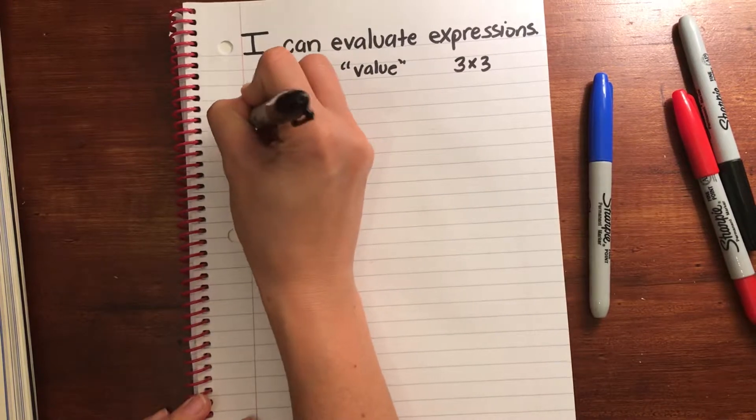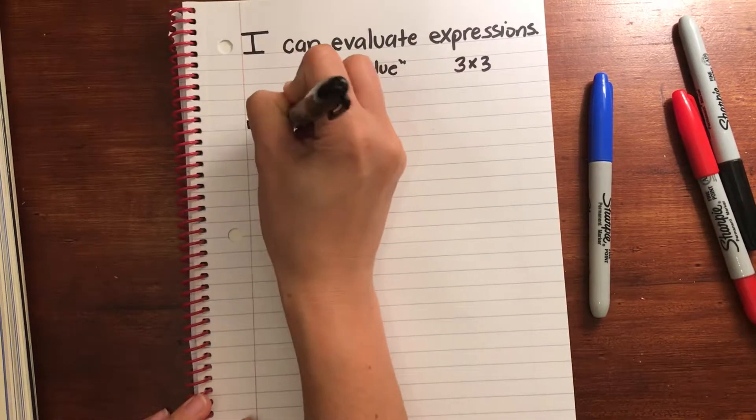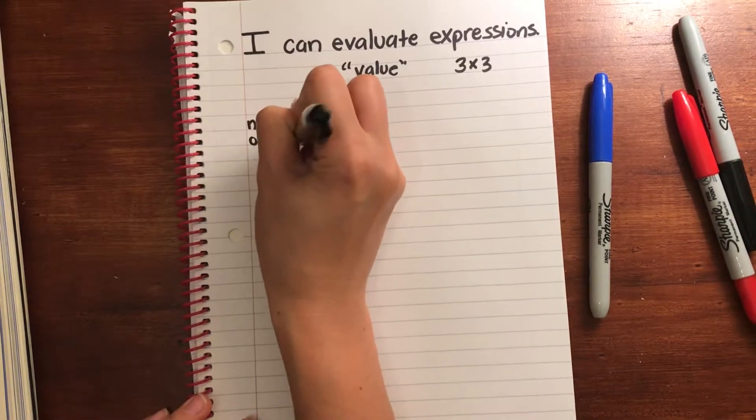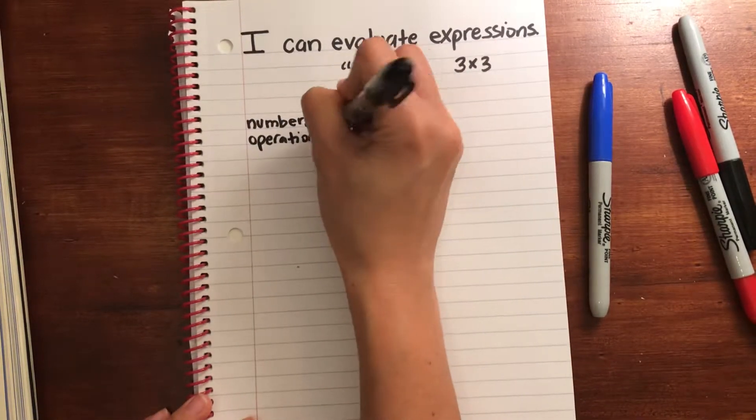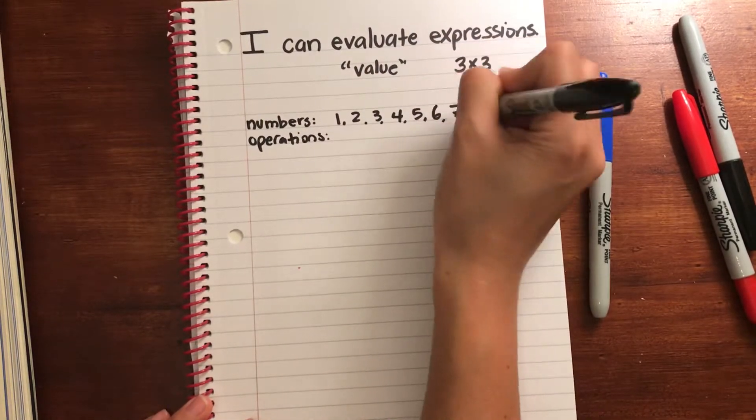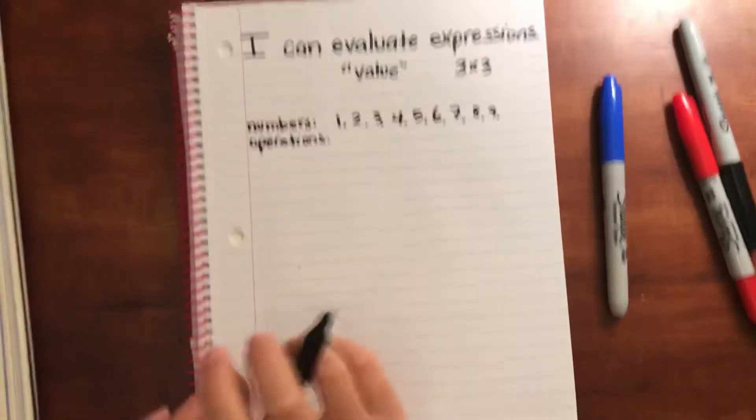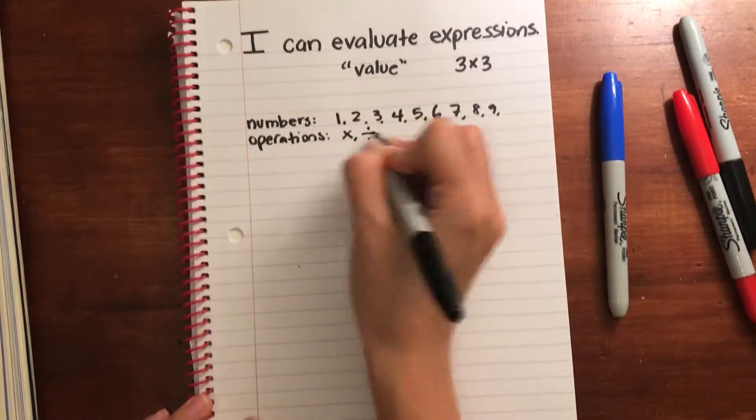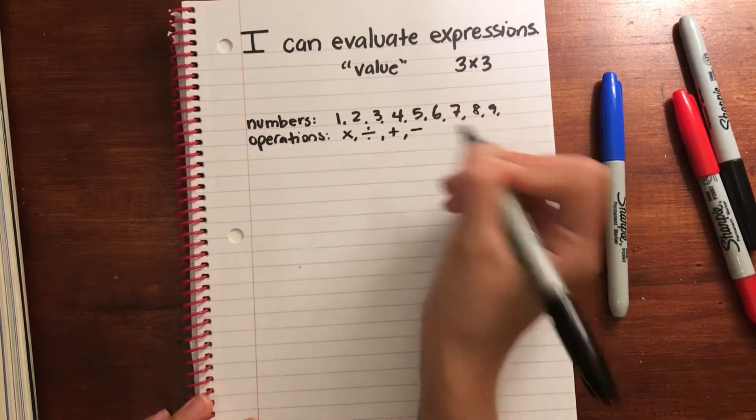Before we talk further about evaluating expressions, let's go ahead and differentiate the difference between numbers and operations. So we have 1, 2, 3, 4, 5, 6, 7, 8, 9, and we'll stop right there. Operations will have multiplication, division, addition, and subtraction.